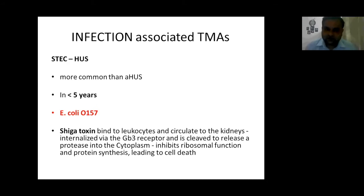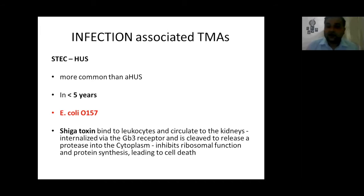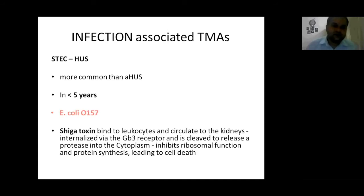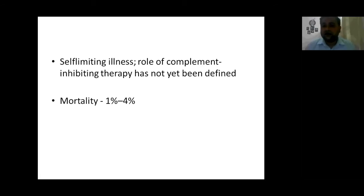Infection-associated TMAs: the most common is Shiga toxin-producing Escherichia coli hemolytic uremic syndrome, more common than atypical complement-mediated HUS, generally seen in pediatric patients under 5 years. The strain is E. coli O157. The Shiga toxin produced by E. coli binds to leukocytes and is carried to the kidneys, internalized by the Gb3 receptor, and cleaved to release a protease into the cytoplasm, which inhibits ribosomal function and protein synthesis, leading to cell death. This infection-related TMA is generally self-limiting, and the role of complement-inhibiting therapy has not yet been defined. We just have to wait for clearance of the Shiga toxin from the body.